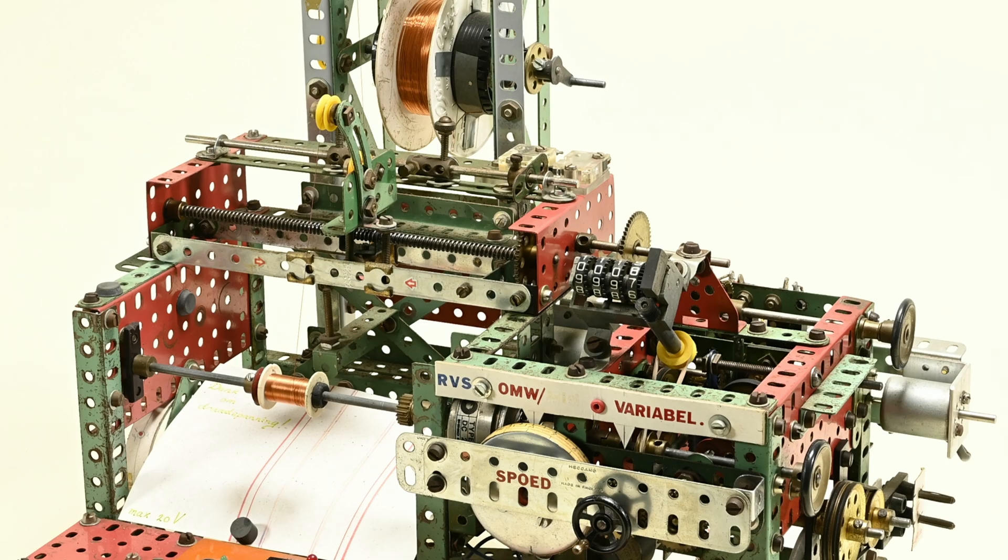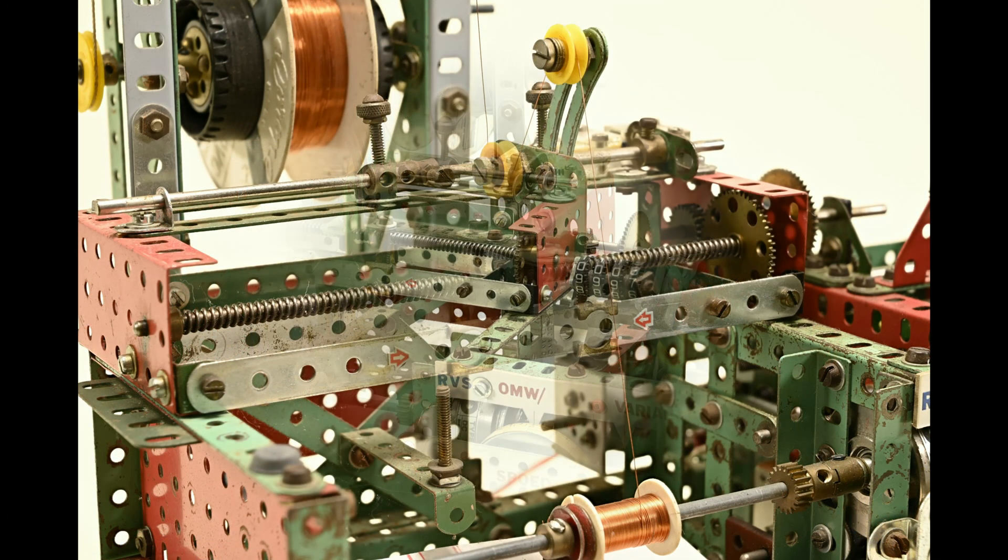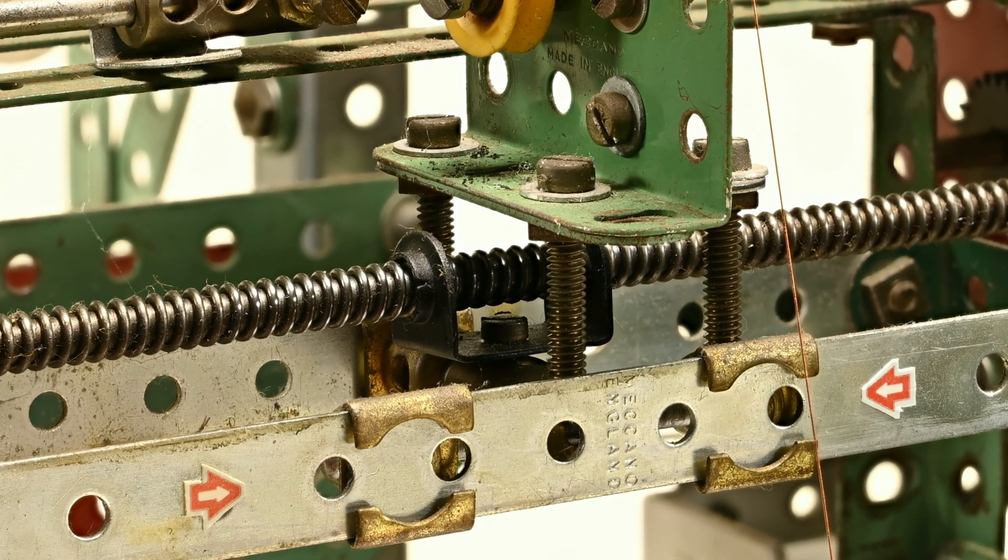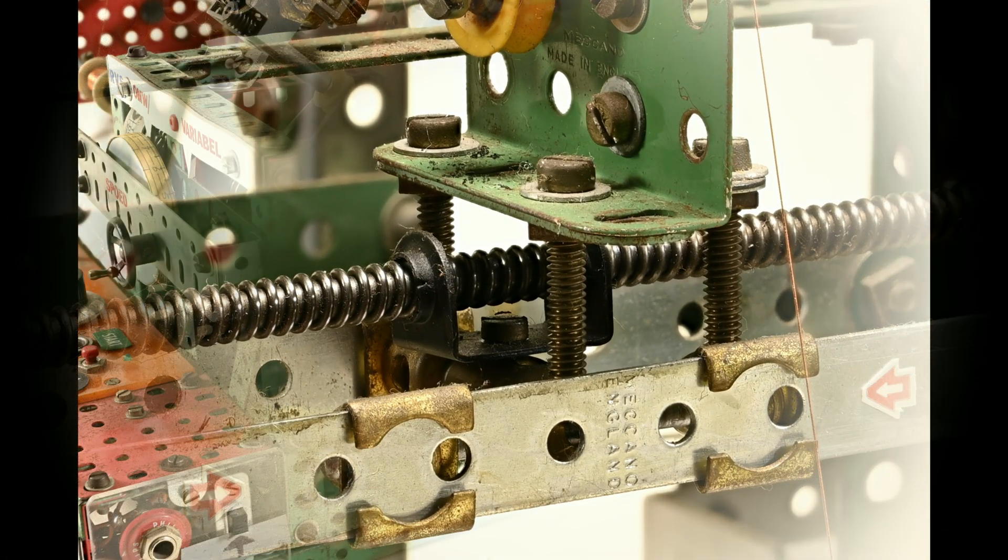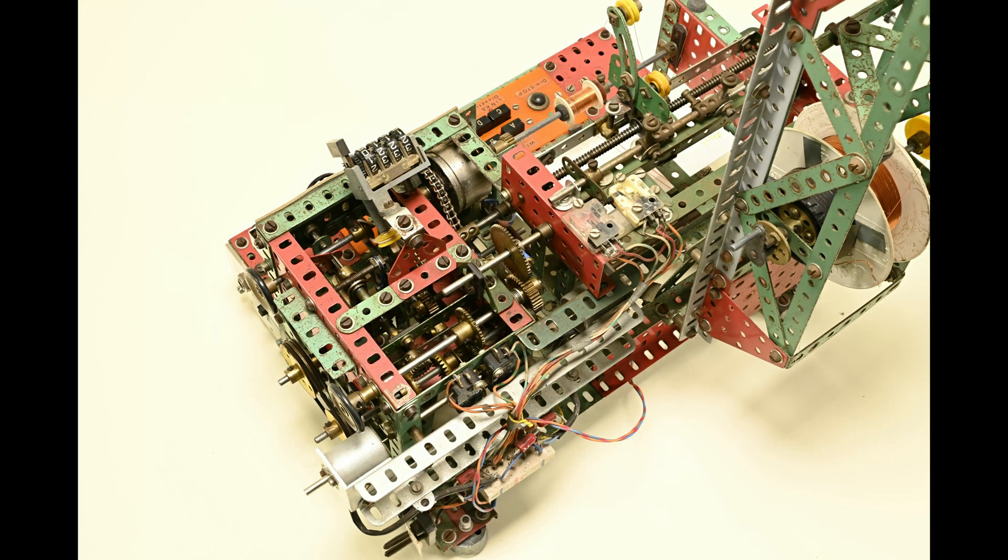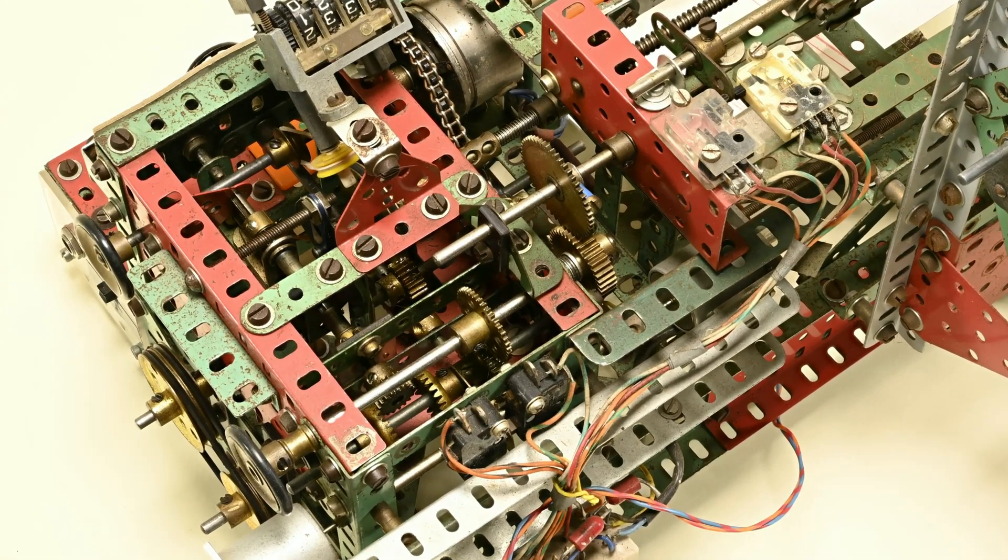This ortho-cyclic coil winding machine has been designed and constructed by Gjald van Sloten from Drachtster Compagny. Gjald designed the machine around 1985 and 1986 and is made entirely from Meccano parts.